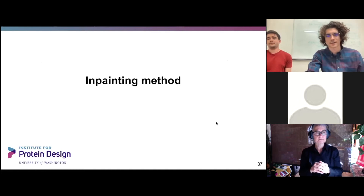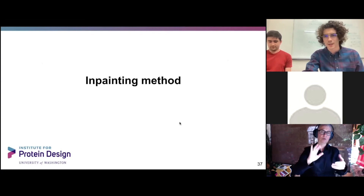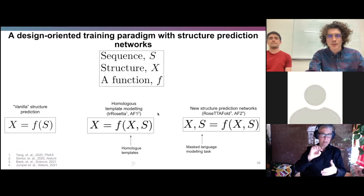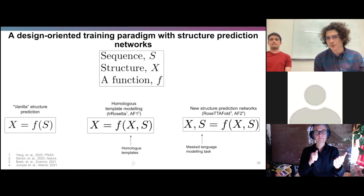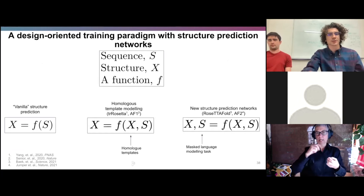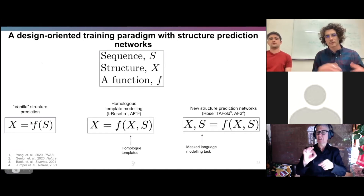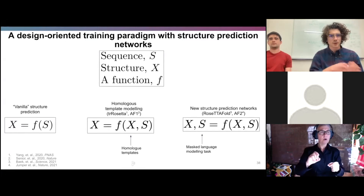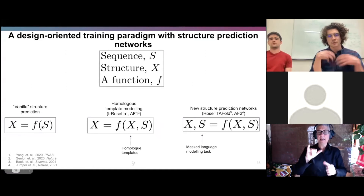Okay, I'm David, and I'll introduce the second method for tackling the same sorts of challenges Doug just described. I wanted to start by contrasting the different functional forms when we say protein structure prediction. On the left is vanilla or ab initio structure prediction — just a function F that takes in only sequence and outputs only structure. This contrasts with the first deep neural networks that could predict protein structure, which took in both sequence and structure in the form of homologous templates.